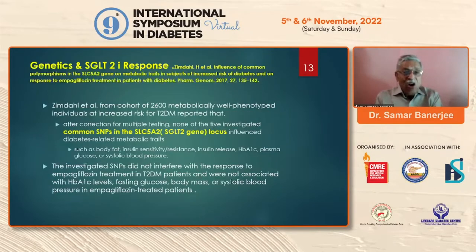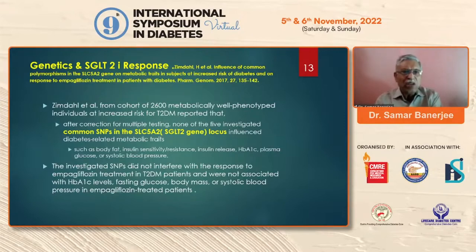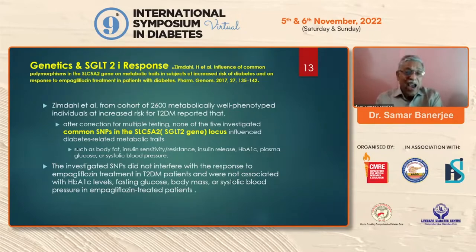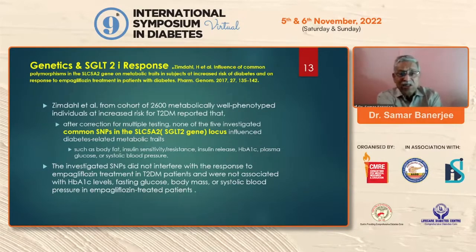In a long-term analysis, Gymdal et al. from a cohort of 2,600 metabolically well-phenotyped individuals with increased risk for type 2 diabetes investigated the genetics. They investigated five single-nucleotide polymorphisms (SNPs) in the SLC5A2 gene, which is responsible for SGLT2 activity.